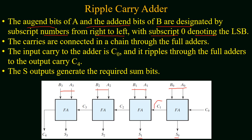The carries are connected in a chain through the full adders, and for addition the input carry C0 is equal to zero. The carry ripples through all the full adders to the output carry C4, and the sum outputs generate the required sum bits.